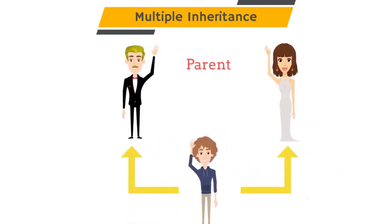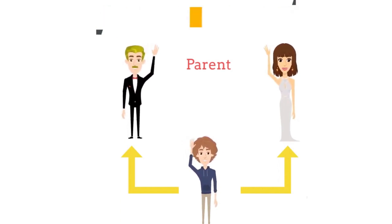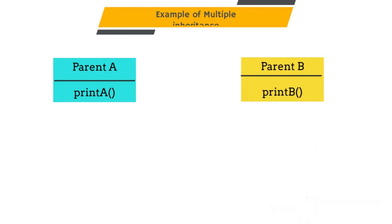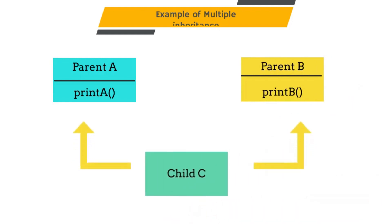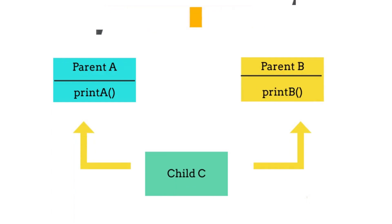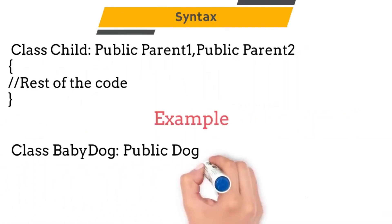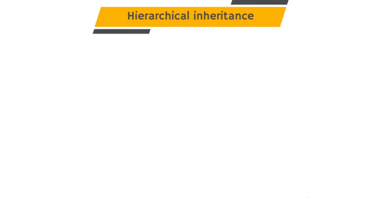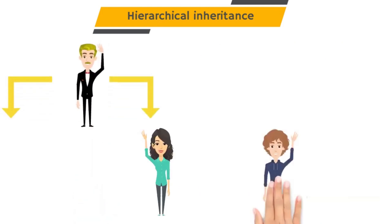The next type is multiple inheritance. In this type, a child class inherits its properties from multiple parents. Consider parent class A with method printA, and parent class B with method printB. Child class C can access both methods, printA and printB. If you want to inherit a child class from multiple parents, you just add visibility and the parent name separated by a comma. You can see the syntax on screen.